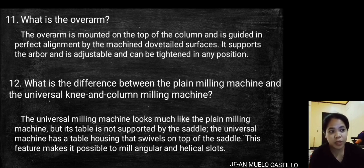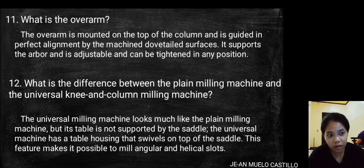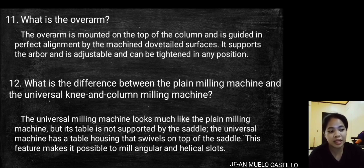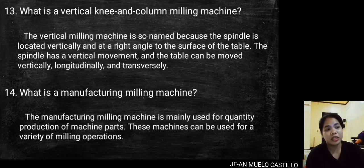What is the difference between the plain milling machine and the universal knee and column milling machine? The universal milling machine looks much like the plain milling machine, but its table is not supported directly by the saddle. The universal machine has a table housing that swivels on top of the saddle, making it possible to mill angular and helical slots.